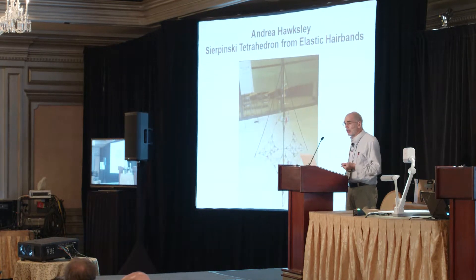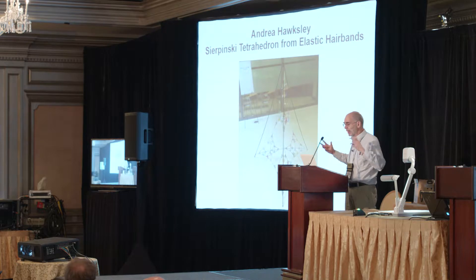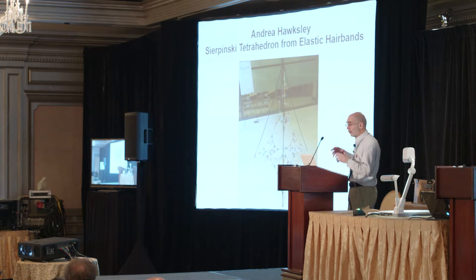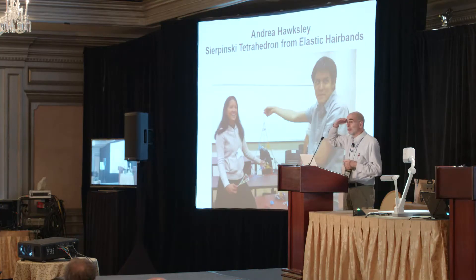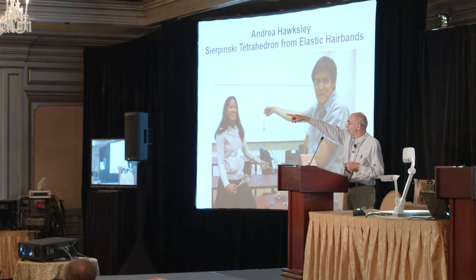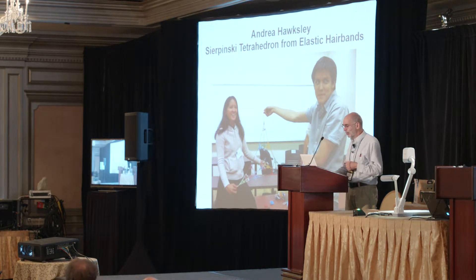Andrea Hawksley is going to make a Sierpinski tetrahedron out of elastic hair bands — actually the next order up from what's shown, so four times as many pieces. She's done incredible things: 120-cells and other objects out of hair bands. Find Andrea and her table.